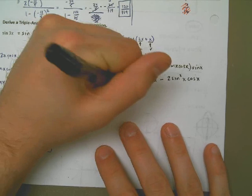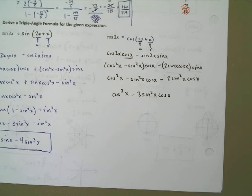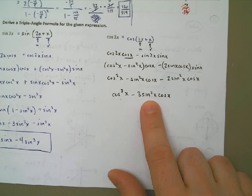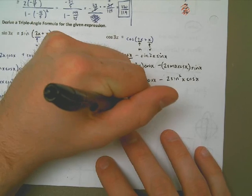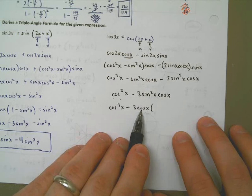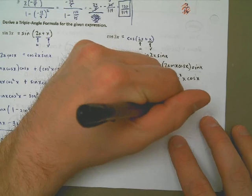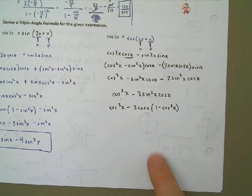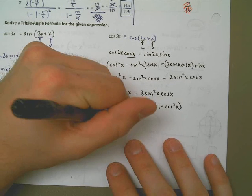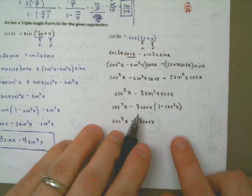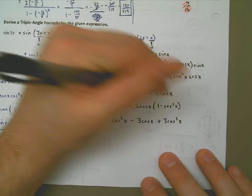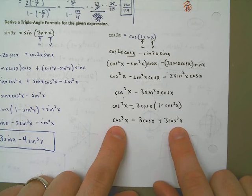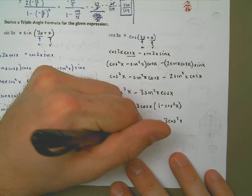I could leave it here, but I notice a sine squared and everything else is in cosine, so I'll convert everything to cosine. I'll replace sine squared x with 1 minus cosine squared of x using the Pythagorean identity. Moving the cosine x out front and distributing the 3 cosine x gives cosine cubed minus 3 cosine x. Then minus times minus is positive, so plus 3 cosine cubed. That's convenient — 1 plus 3 is 4 — so I end up with 4 cosine cubed of x minus 3 cosine of x.